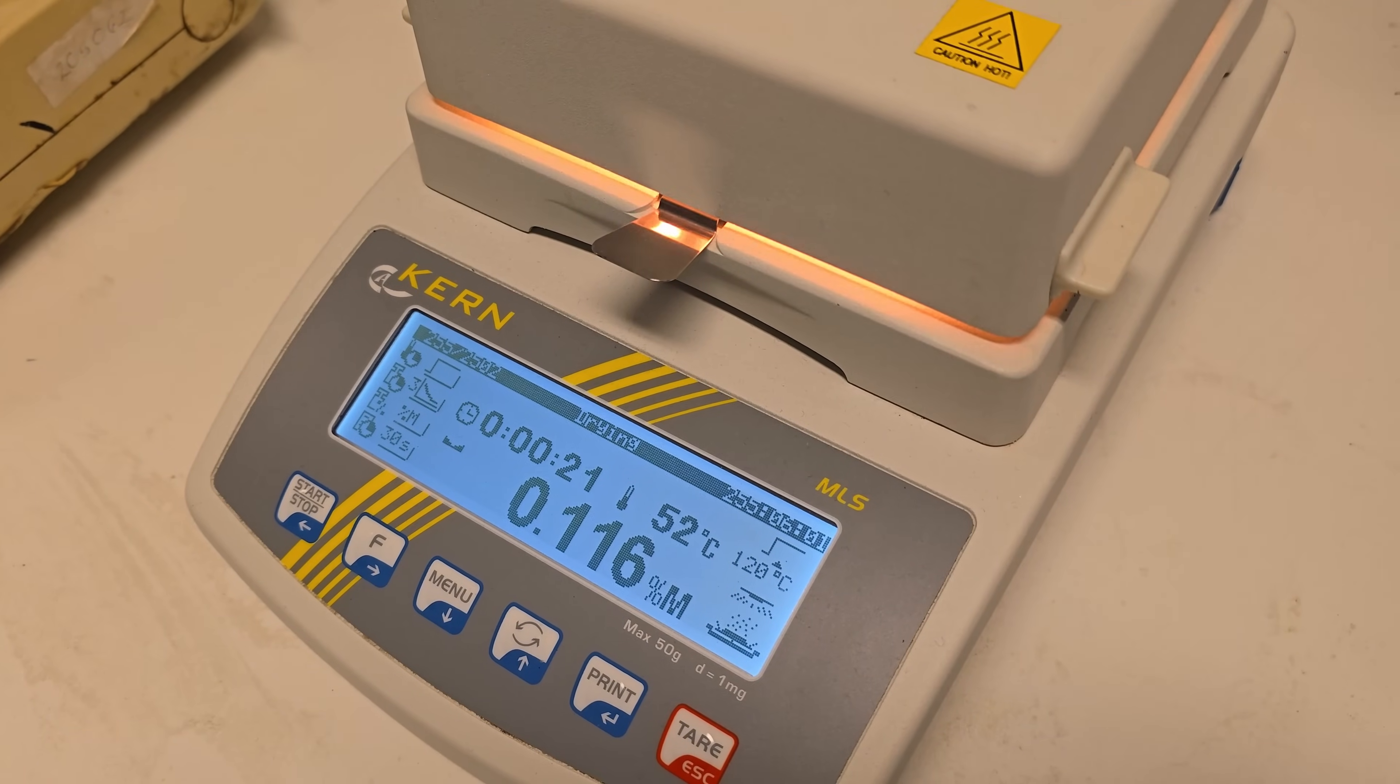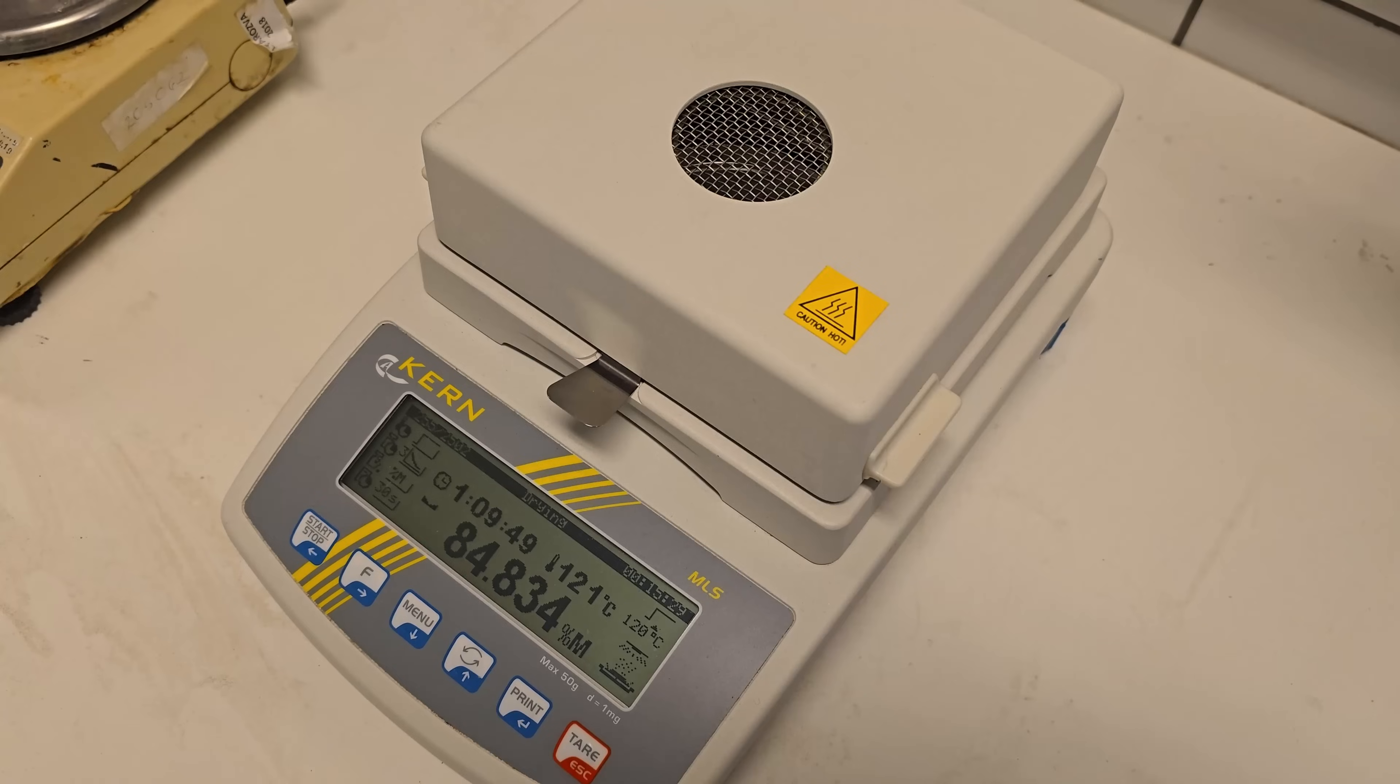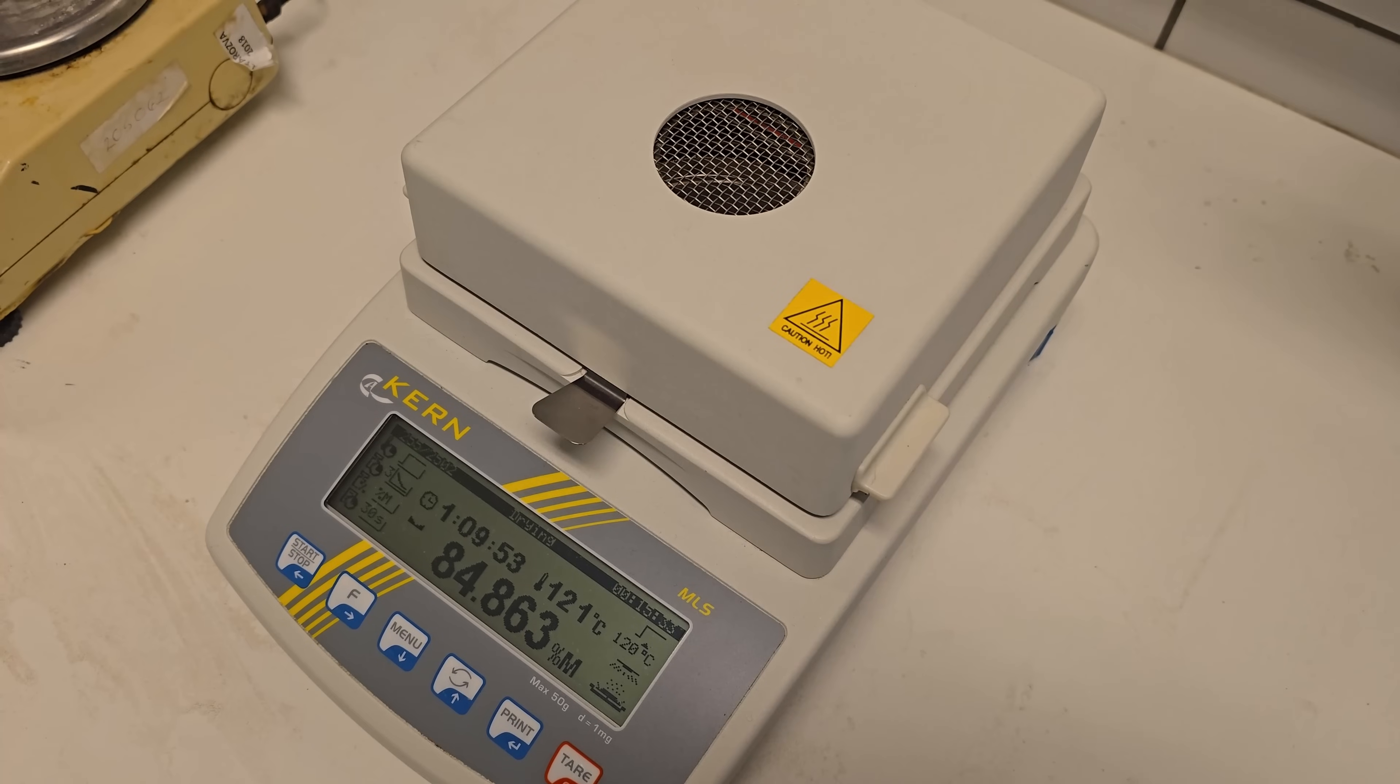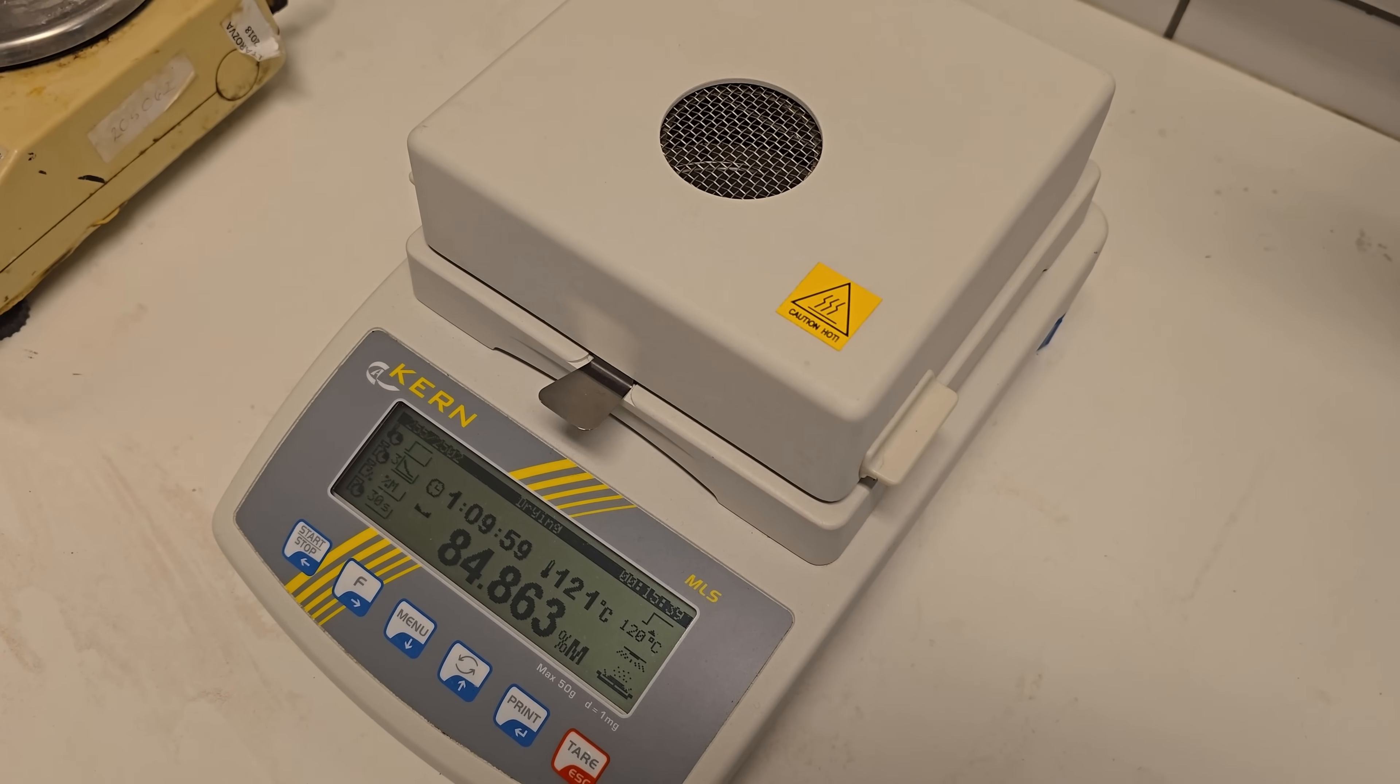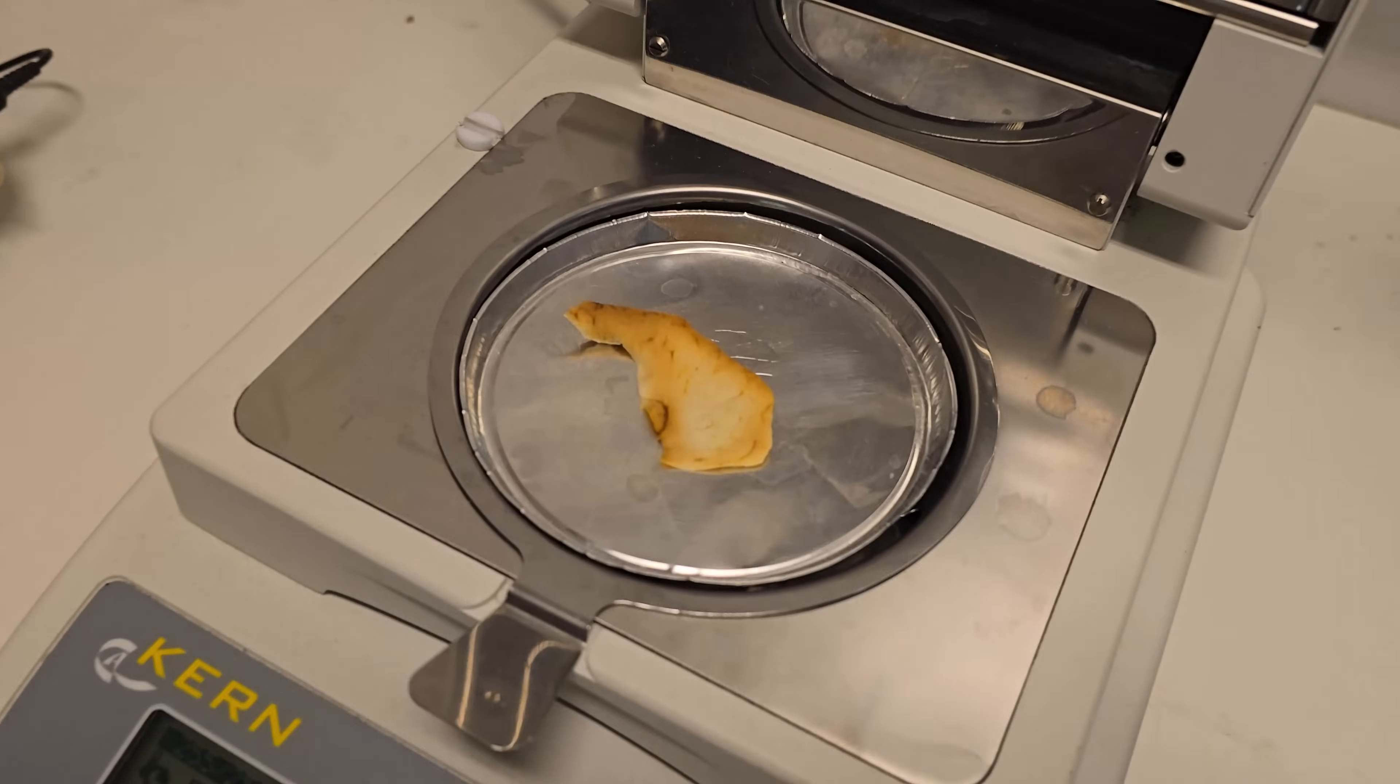And the material we want to measure goes here. We can set the desired temperature. There are different programs. But for example, we can set the constant temperature. And it will follow the weight, the mass actually. And it will show us the removed percentage of the humidity. And with this, when there will be no changes in one or two minutes, it will stop. And actually, it will show us the removed humidity in percentage.